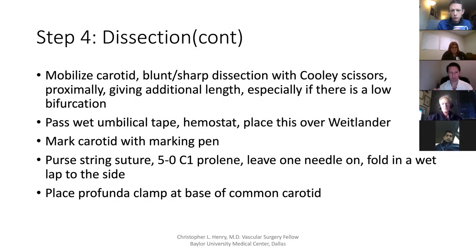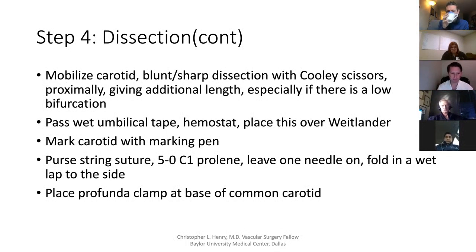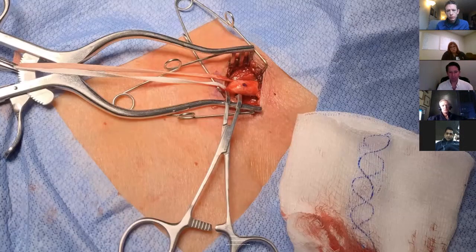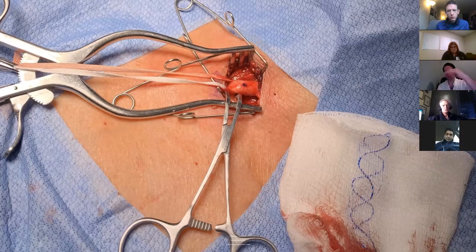You don't want a full-thickness bite of the carotid. Make a nice purse string, snip one needle off, leave another needle on, and typically put that into a wet lap, fold it up, and place it on the side of the neck so it doesn't get tangled. Then we preferentially use the Profunda clamp — it slides in nicely, has a low profile, and keeps everything else out of the way. The two springs, the wet umbilical tape on a little bit of tension in the crotch of the Wheatlander on a hemostat — this brings the carotid up into the operative field and gives a nice working angle as you place your wires and stents.